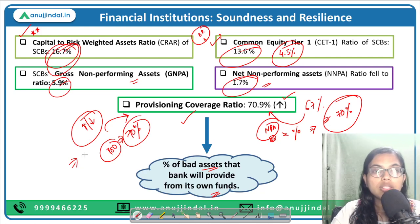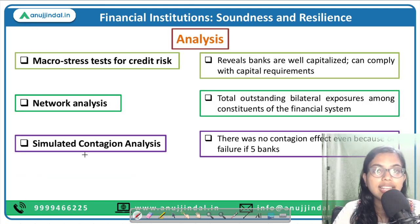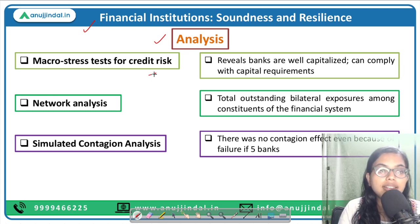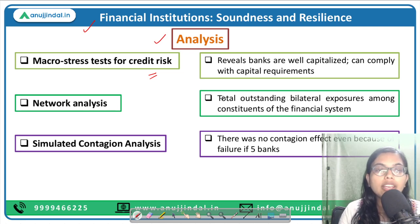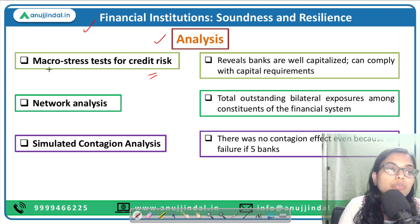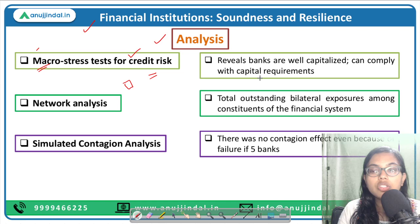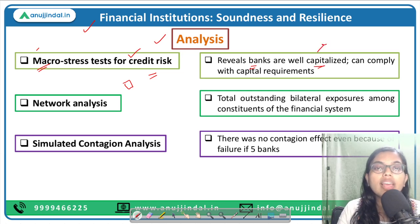Now we will be talking about certain analyses done in the financial institutions. The first is the Macro Stress Test for Credit Risk. Stress testing is basically quantifying the link between macro-economic variables and the health of the financial institution. You take macro-level indicators and test them against financial indicators. The macro level stress test for credit risk reveals that scheduled commercial banks are well-capitalized — they have maintained more than required capital ratios.